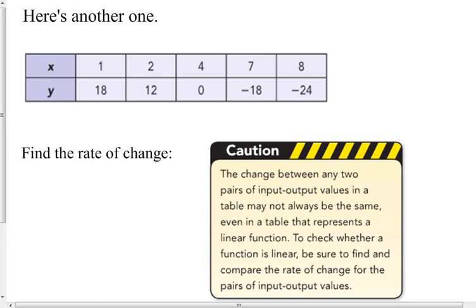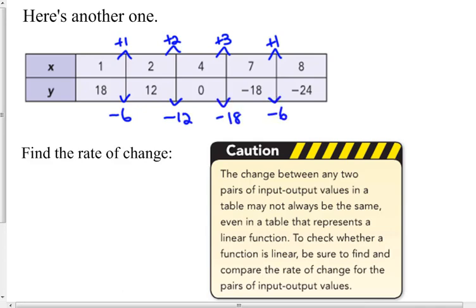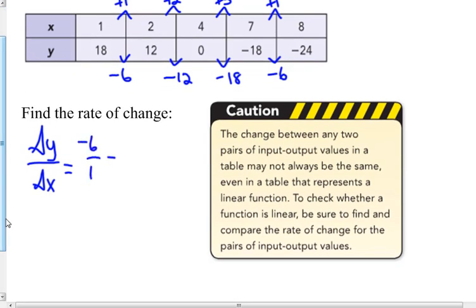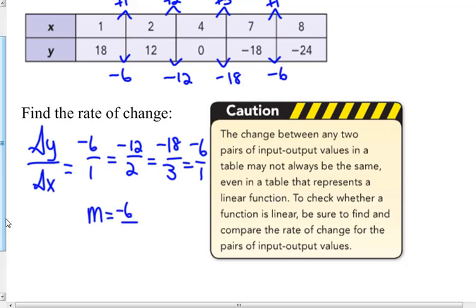Here's another one. My x values are going up by one, then by two, then by three, then by one. My y values are going down by six, down by twelve, down by eighteen, down by six. So my delta y over delta x — my slope — is negative six over one, which equals negative twelve over two, which equals negative eighteen over three, which equals negative six over one. My rate of change is constant: y values go down by six, x values go up by one.